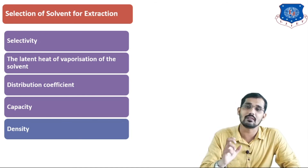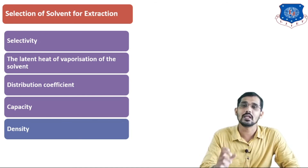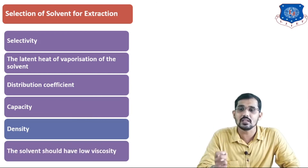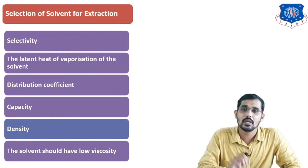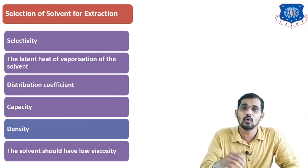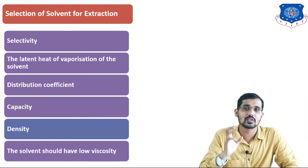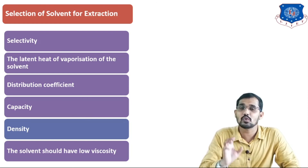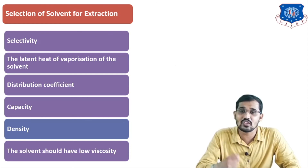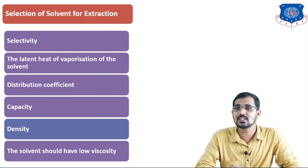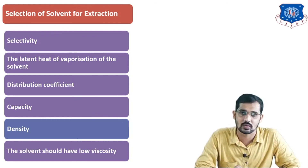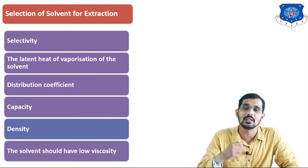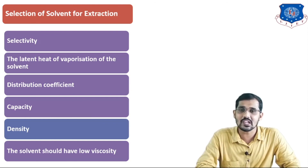The capacity of the extracting solvent should be as high as possible so it can extract a large amount of solute from the liquid solution. Density difference between the solvents should be as high as possible so we can separate the liquid-liquid solution using a liquid-liquid extraction apparatus. The solvent should have low viscosity so that the extracting solvent comes into good contact with the feed solution and the contact time is sufficient for better efficiency. These parameters are very important for designing extraction equipment.